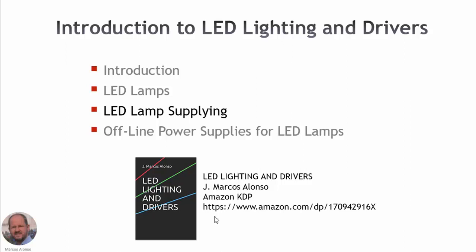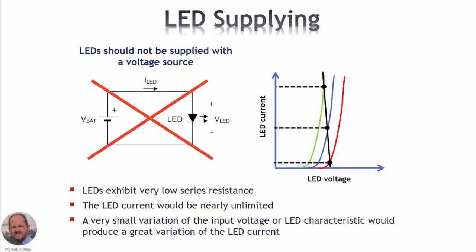The first idea about LED supplying is that LEDs should not be supplied with a voltage source, because the LED itself, as we can see in these different characteristics, behaves almost as a voltage source with very small series resistance. So if we apply another voltage source, the current is going to be very high and it can destroy the LED.